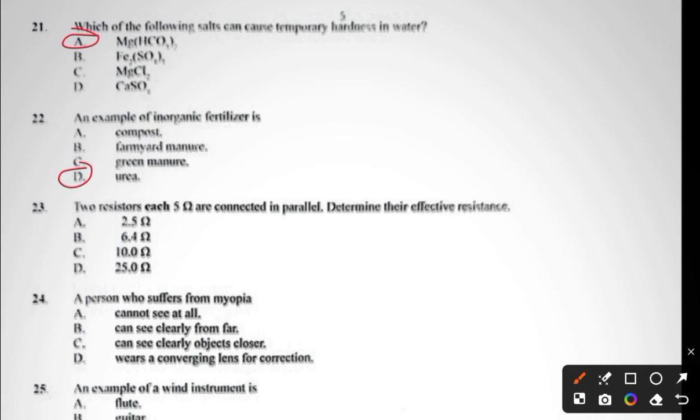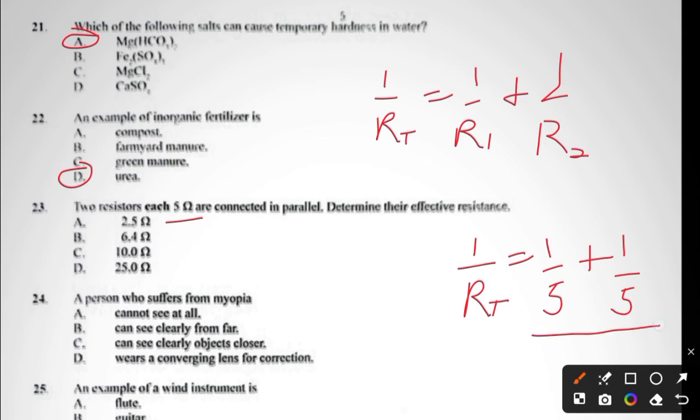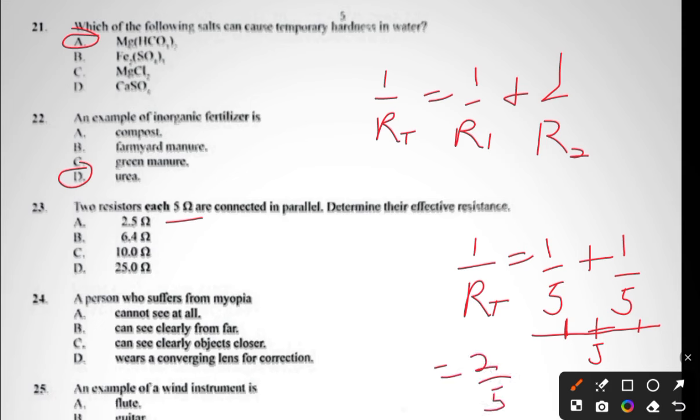Question twenty-three: two resistors, each 5 ohms, are connected in parallel. Determine their effective resistance. Resistances connected in parallel, there is a formula: 1 over RT equals 1 over R1 plus 1 over R2. In this question, we are told that both of them are 5 ohms, so 1 over RT equals 1 over 5 plus 1 over 5.